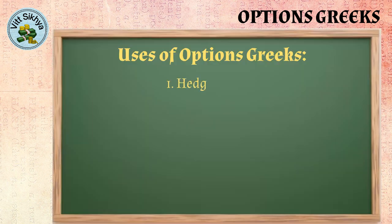Options Greeks can be used for a variety of purposes, including to hedge existing positions or portfolios. For example, if you own a portfolio of stocks, you could buy put options on the same stocks to protect yourself from a decline in the market.